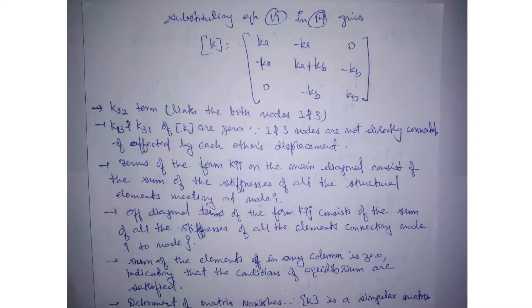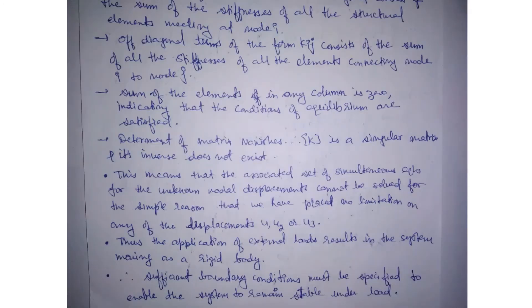Sum of the elements in any column is 0, indicating that the conditions of equilibrium are satisfied. This will prove that the matrix is in equilibrium state. Ka plus minus Ka is 0. If we add this column, it will have 0. If we add this column, it will have 0. It will have the equilibrium state.